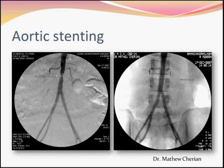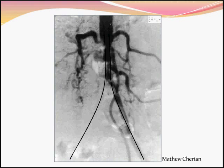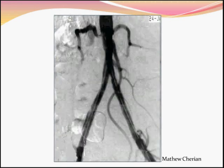Here is an example of a focal stenosis of the aorta that has been treated by angioplasty and stenting. Another example shows a stenosis close to the bifurcation where wires are taken from both sides, followed by dilatation and stenting, yielding a good result.